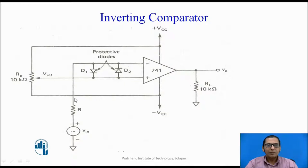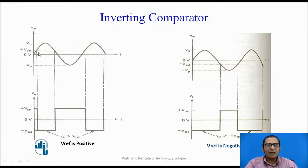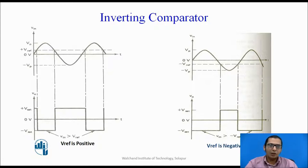Assuming the reference voltage connected to the non-inverting terminal is plus V reference, for example 1 volt: as the sinusoidal voltage rises from 0 volt up to V reference, the input at the non-inverting terminal is greater than that of the inverting terminal, and the output is positive saturation. At the instant when the inverting terminal input exceeds the non-inverting terminal input, the output goes into negative saturation. When the input at the inverting terminal falls back below the non-inverting terminal, the output returns to positive saturation. The rule remains: when the inverting terminal input is greater than the non-inverting terminal input, output is negative saturation; when the non-inverting terminal input is greater, output is positive saturation.